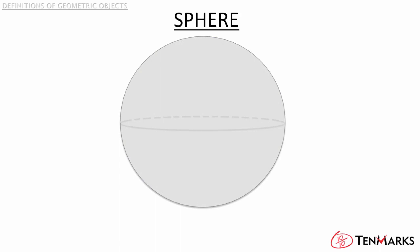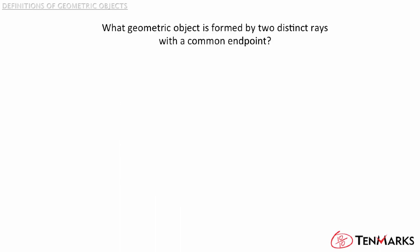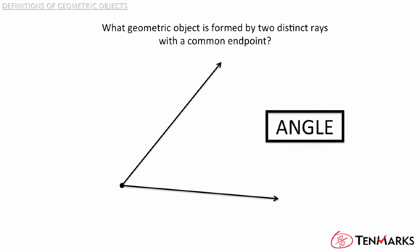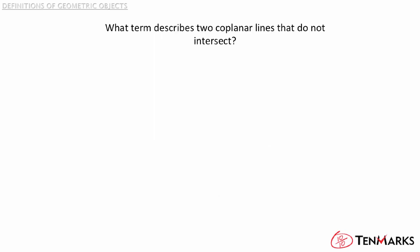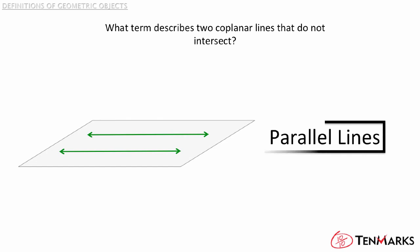Based on these vocabulary words, try the following problems. What geometric object is formed by two distinct rays with a common endpoint? Best way to figure this out is to draw it. So from one endpoint draw two rays and you can see that you have formed an angle. What term describes two coplanar lines that do not intersect? So coplanar means they are on the same plane and draw two lines that never intersect. You can see you have parallel lines.